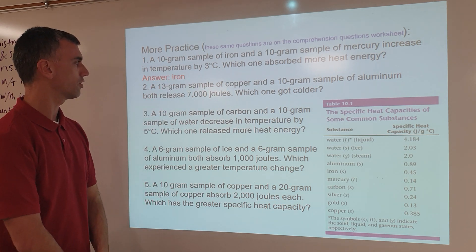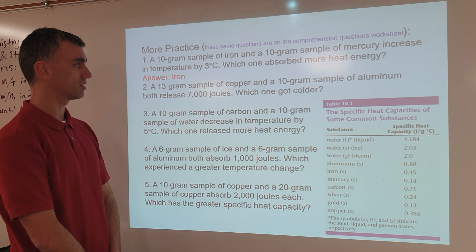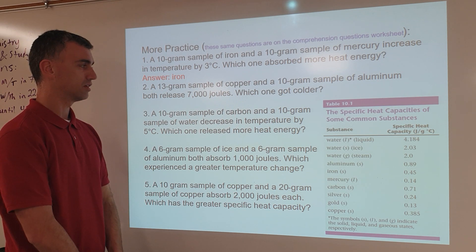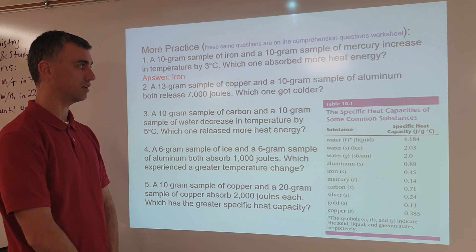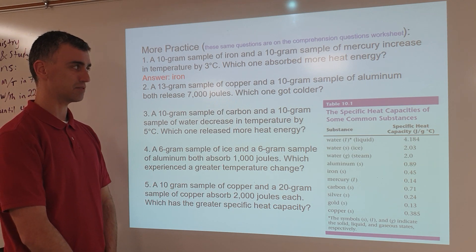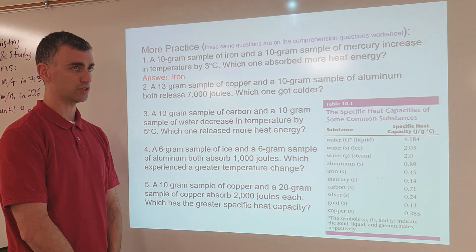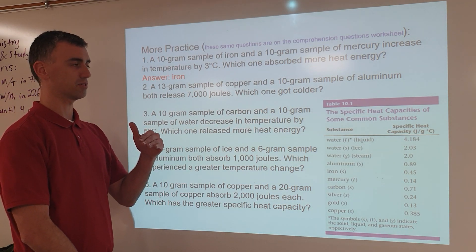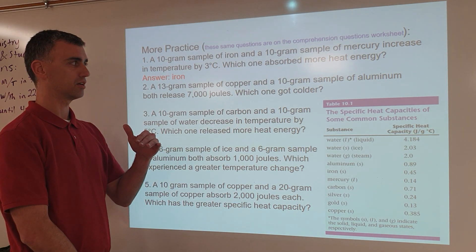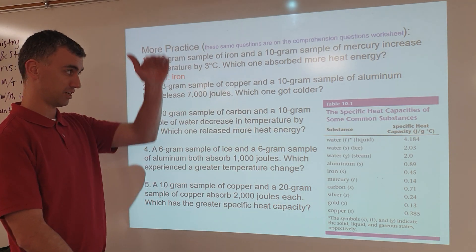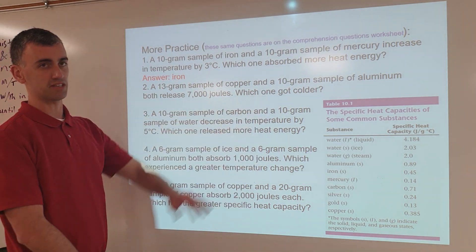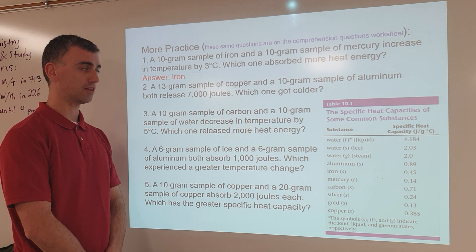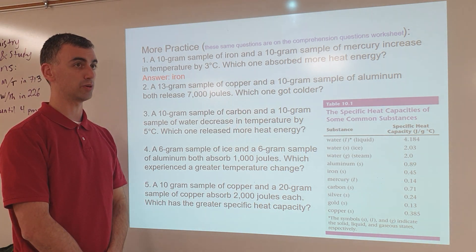Next: a 13 gram sample of copper and a 10 gram sample of aluminum both released 7,000 joules — which one got colder? This is a similar idea. If something has a high specific heat capacity, it is highly resistant to temperature change, so its temperature will only go up or down less compared to something with a lower specific heat capacity, which is less resistant to temperature change.